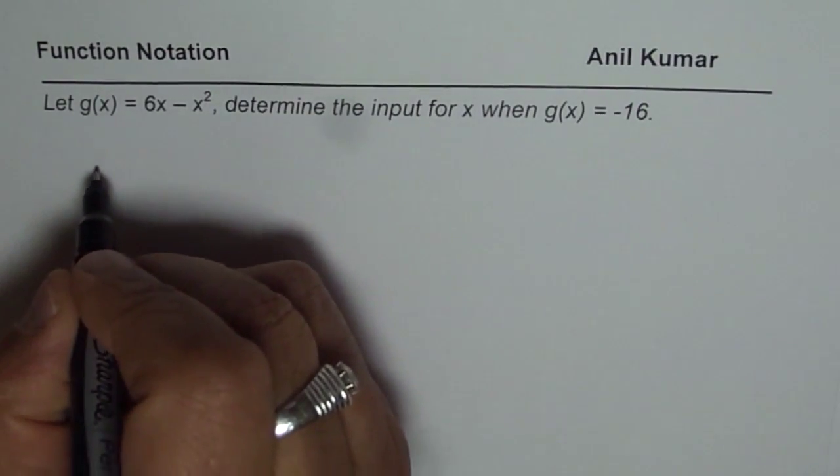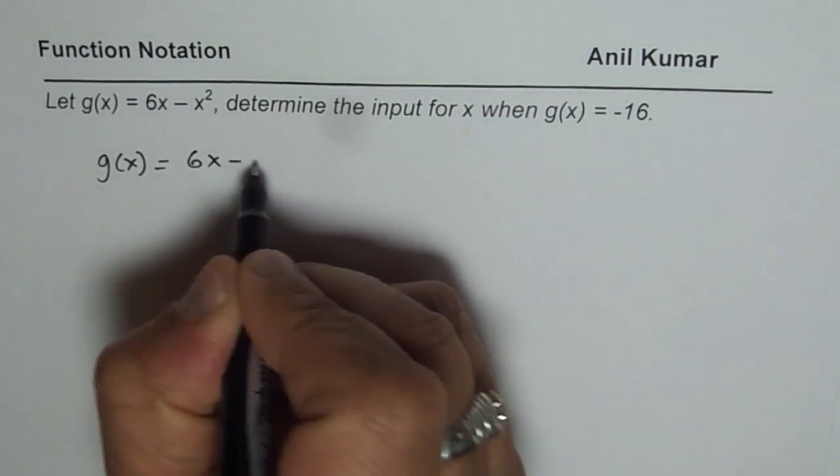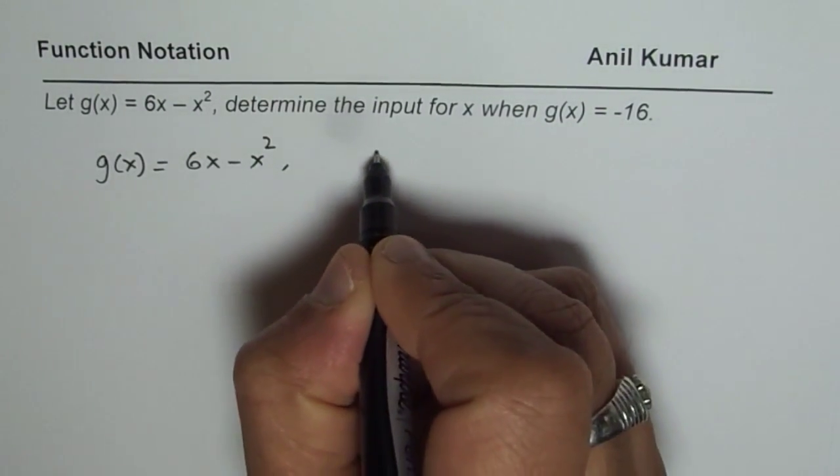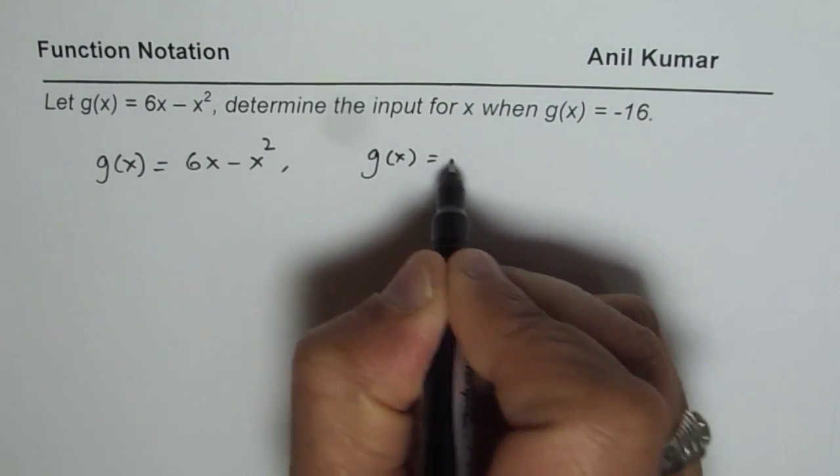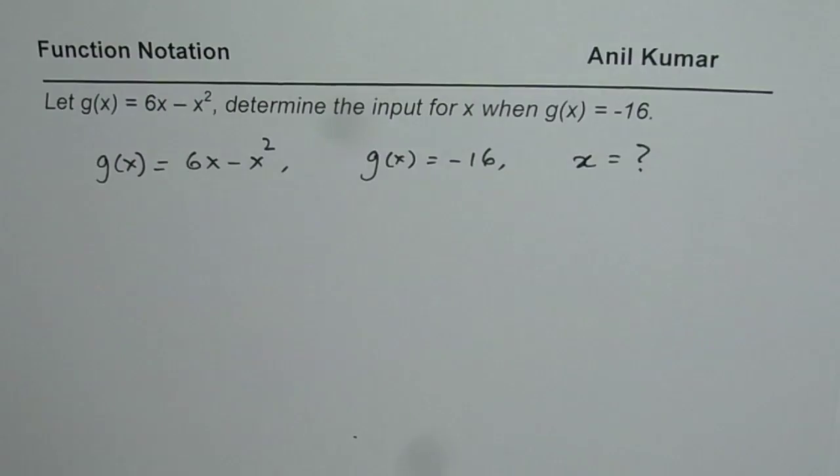That is to say, we are given a couple of things here. The function g(x) is defined as 6x minus x squared. We are given the value of g(x) as minus 16. What we need to find is the value of x.